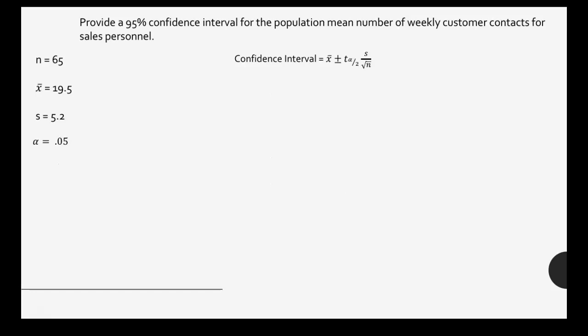If we now want to provide a 95% confidence interval, the only thing that's changing is our alpha. Alpha is now 0.05, meaning alpha divided by 2 is 0.025.